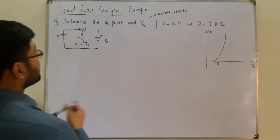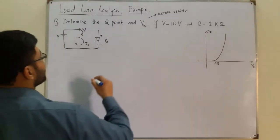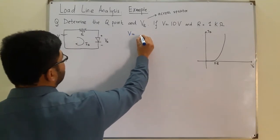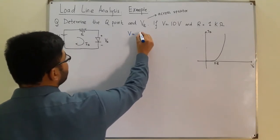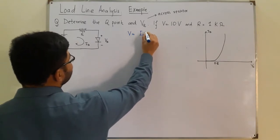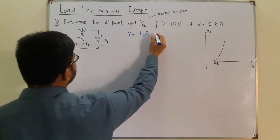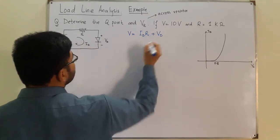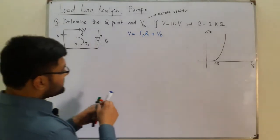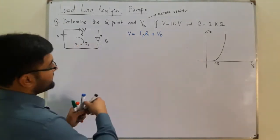So what do we have? Let's apply KVL. V is equal to VR, and VR could be written as ID into R, plus the voltage across the diode VD. This is the same equation, so let me write it as equation number one.